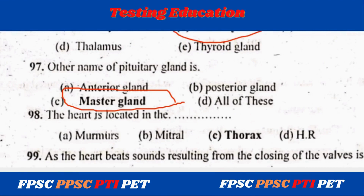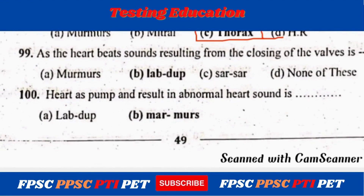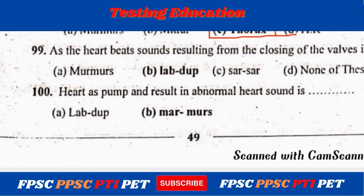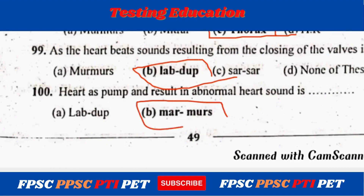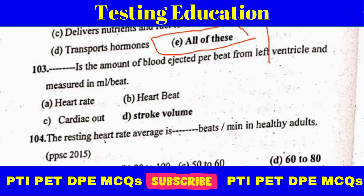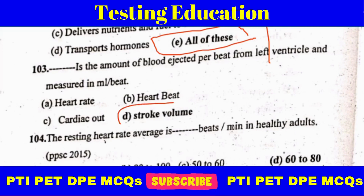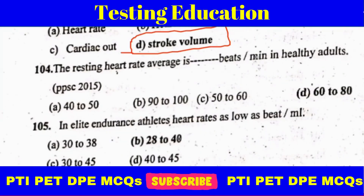The heart is located in the thorax. The heartbeat sound results from the closing of the valves. An abnormal heart sound is called a heart murmur. The amount of blood ejected per beat from the left ventricle, measured in ml per beat, is the stroke volume. The resting heart rate average is 60 to 80 beats per minute in a healthy adult.